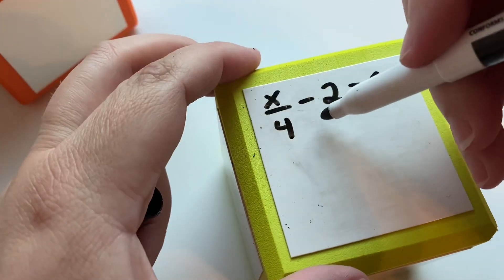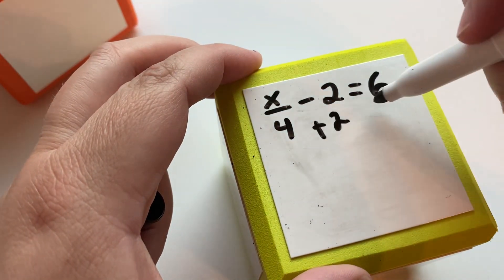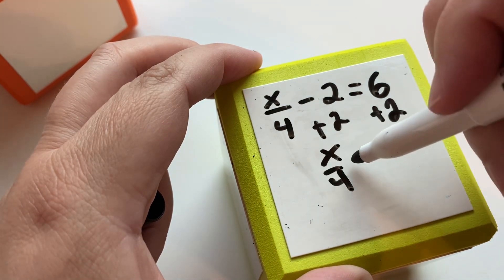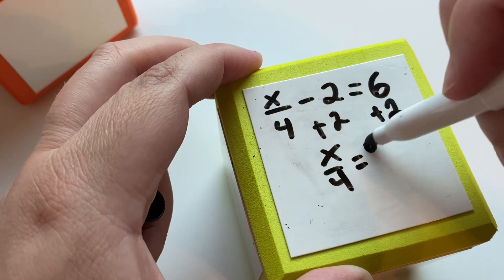So we said start with the subtraction, which means we're going to add 2 to both sides. And we're going to get x divided by 4 equals 8.